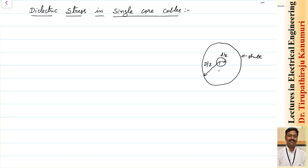Let us try to calculate how the dielectric stress varies as we move from the center of the conductor outward. Inside the conductor that is an equipotential surface, so the electric field intensity will be equal to zero. The electric field intensity will be maximum at the surface of the conductor, and from there it will decay as you go away from the conductor.